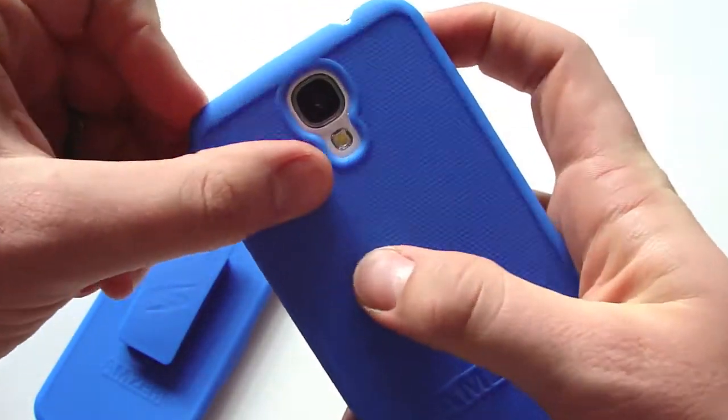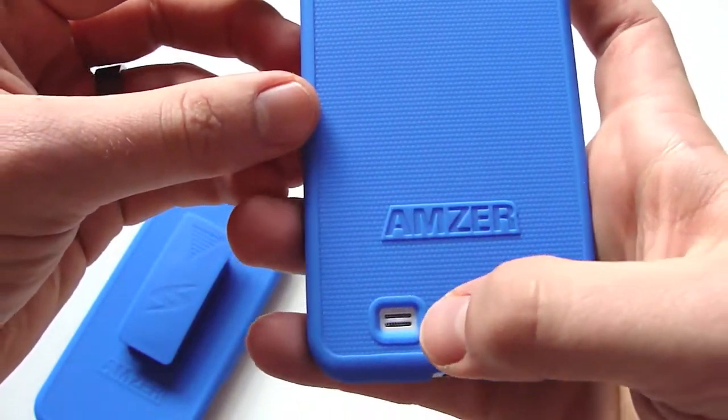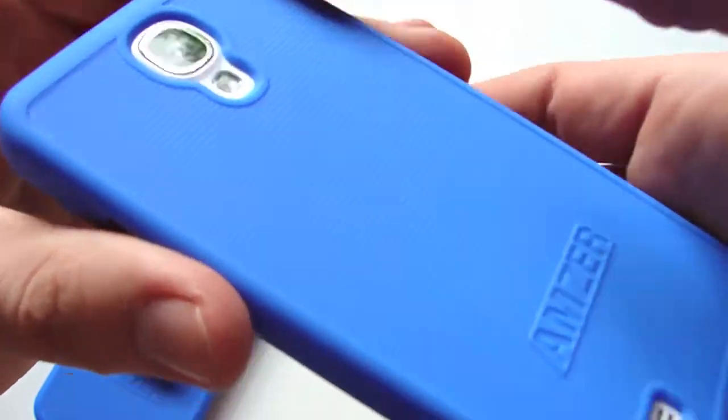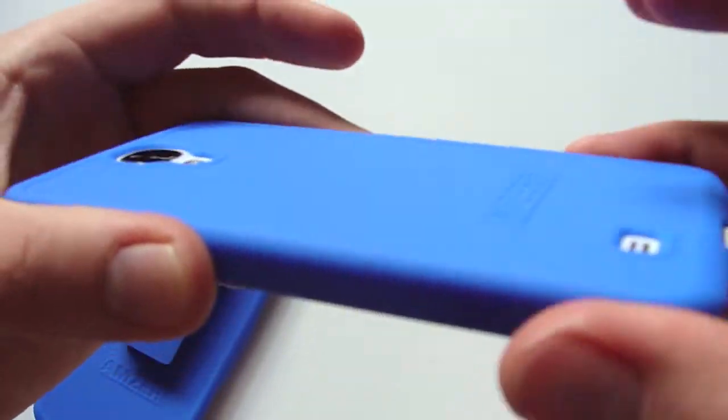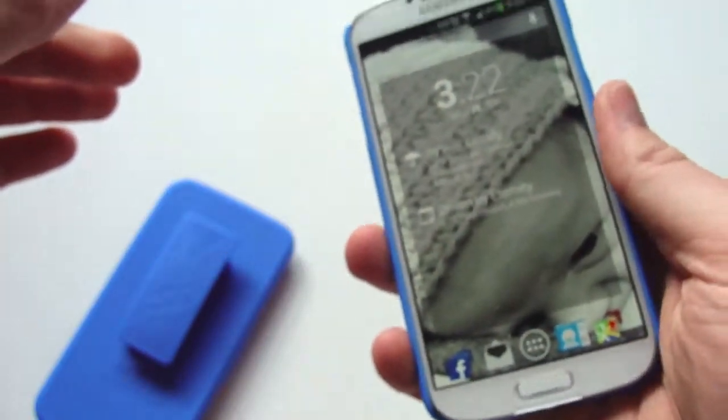On the backhand side, you have a precise cutout for your camera and LED light. Get your AMZER logo and a cutout for your speaker. This is a textured back, so it kind of gives you that nice grip kind of feel to it.